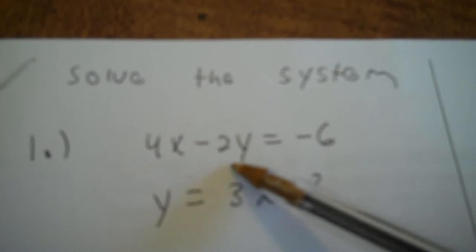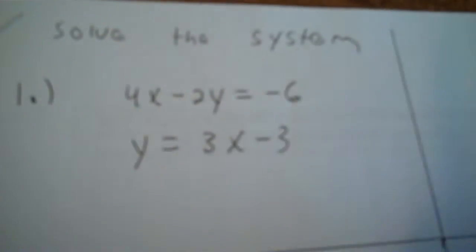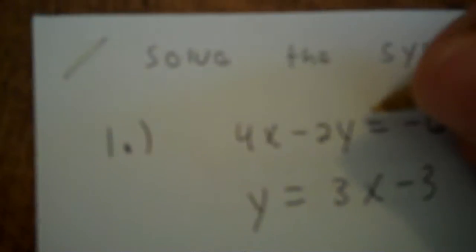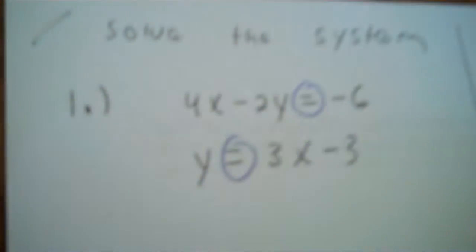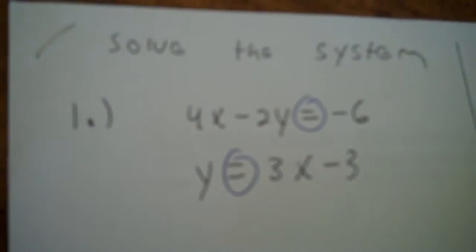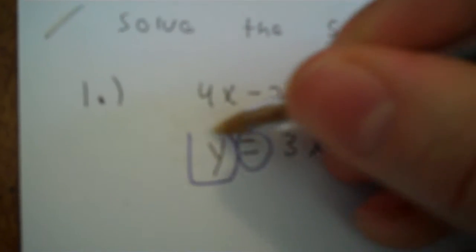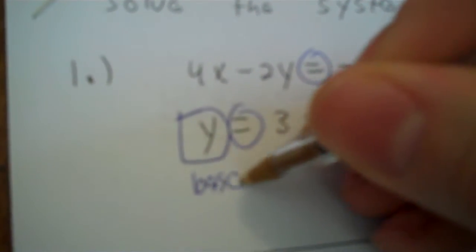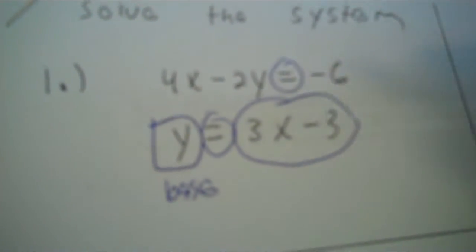Ok, I solved the system of equations. We have 4x minus 2y equals negative 6, and then y equals 3x minus 3. We need to find the x and y values. Circle your equals. Do you have a letter by itself? You do, you have y. That's your base. It's equal to 3x minus 3.